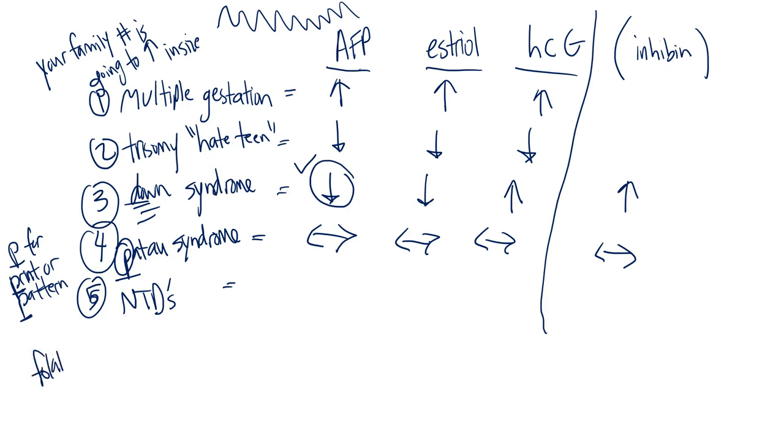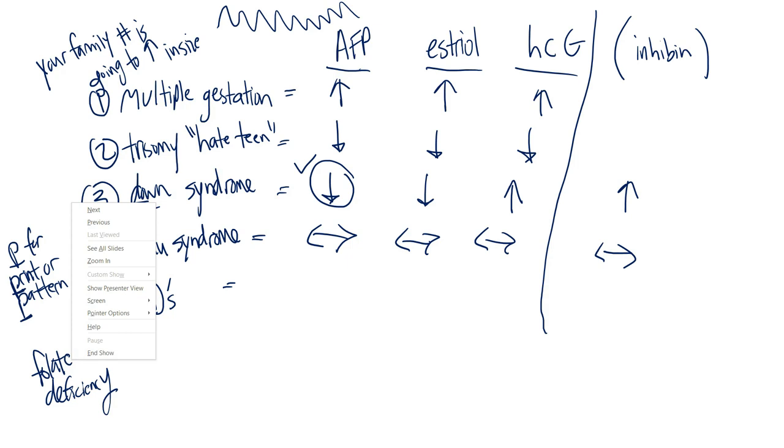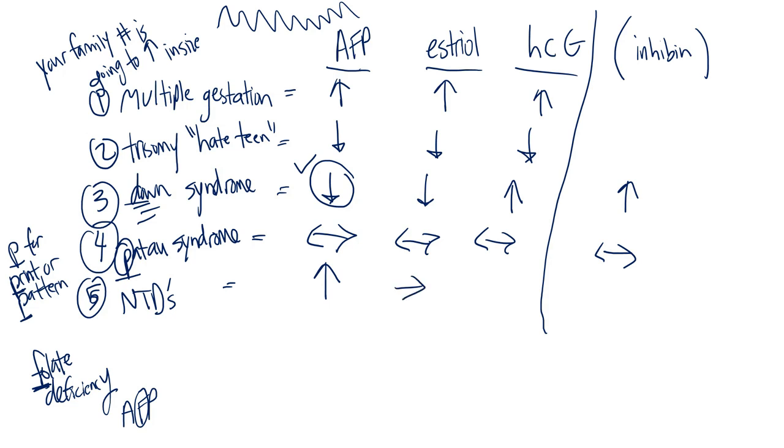That's why mothers need enough folate or the child is at risk for neural tube defects. Folate starts with F and I relate that to alpha fetoprotein. You're pushing for the mother to get folate to avoid neural tube defects, so AFP will increase but everything else stays the same.